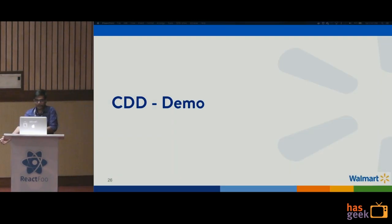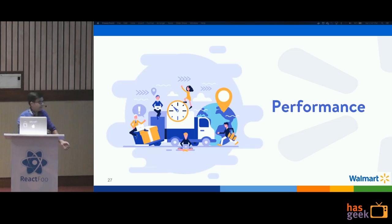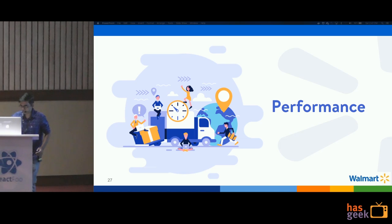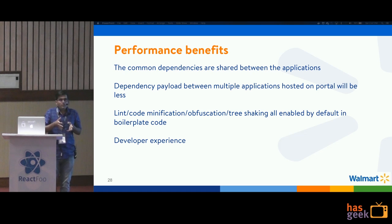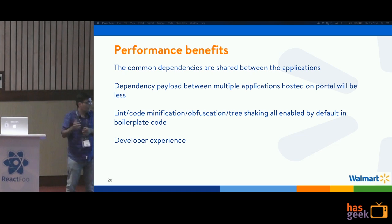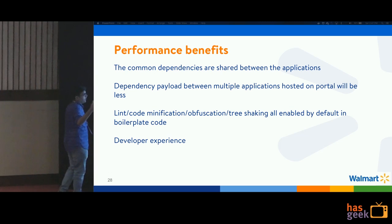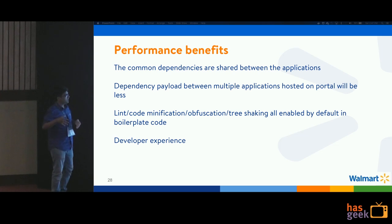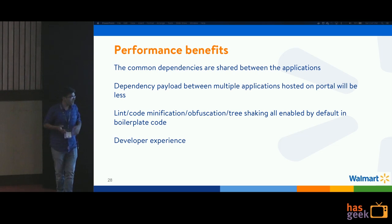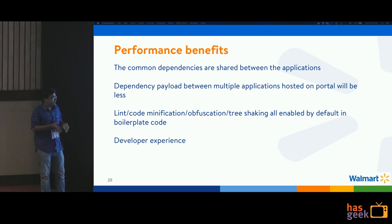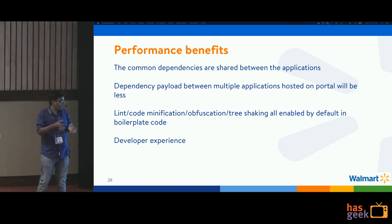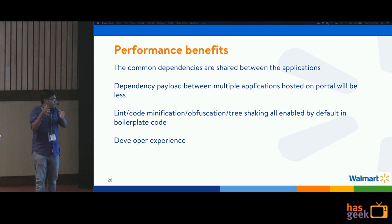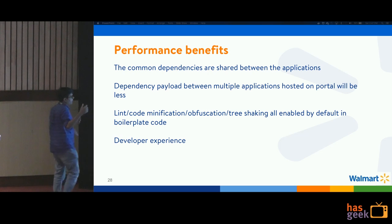That was the demo of how CDD works. Now let's see the performance benefits of this npm approach. Sharing npm modules means the dependency payload downloaded when moving from application one to application two is reduced. Because we provide a boilerplate repo, all code required for minification, obfuscation, dead code elimination, and tree shaking is built in by default. Developers don't need to invest time writing linting or minification configuration — they can quickly start on their business use case. Overall, the developer experience is significantly better.